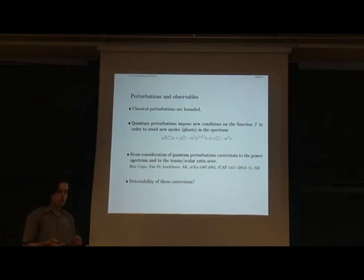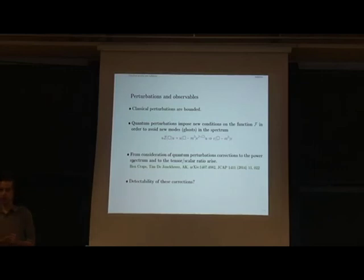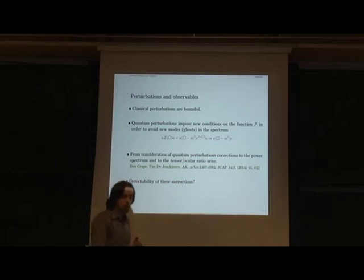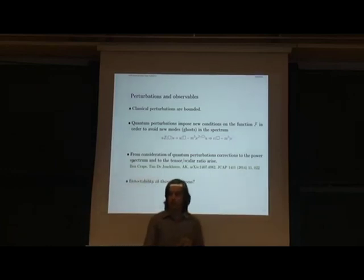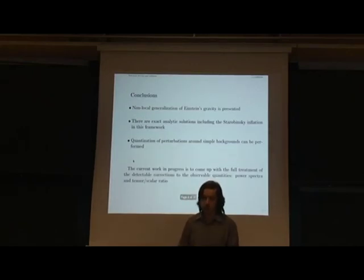And in principle, this is bidirectional process. We can predict something for the observations. Or, other way around, based on observations, we can restrict these non-local ingredients in the model in order to make them compatible with what we see. Because, as I explained, considering these non-local theories is not to confront the experiment. The experiment is already confronted with R-squared gravity. The reason for this non-local business is to make the story UV-complete, which is the main motivation.